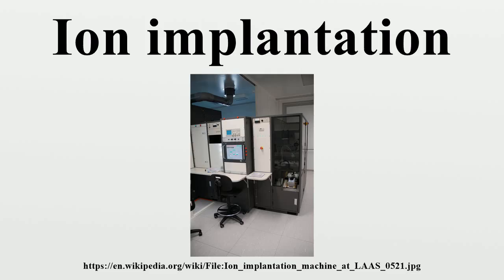Ion implantation equipment typically consists of an ion source, where ions of the desired element are produced; an accelerator, where the ions are electrostatically accelerated to a high energy; and a target chamber, where the ions impinge on a target, which is the material to be implanted. Thus ion implantation is a special case of particle radiation.